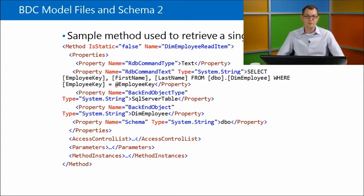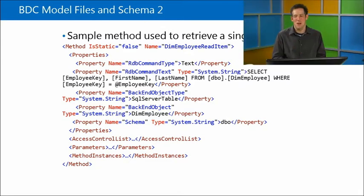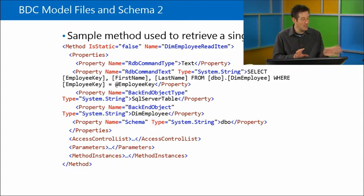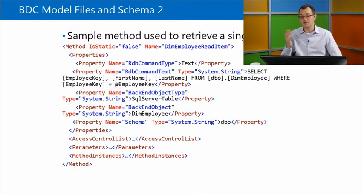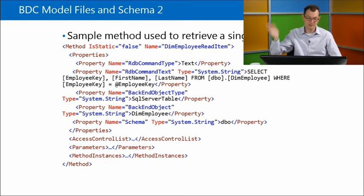What's behind the visual designer is all XML configuration files. You can see the command being executed, the parameter for the ID, the object that's going to be used, the type of data, and the database schema. We don't have to work with the XML directly anymore. It was a challenge because XML wasn't exactly developer-friendly, and developers actually were scared of the business data catalog — and so were admins.